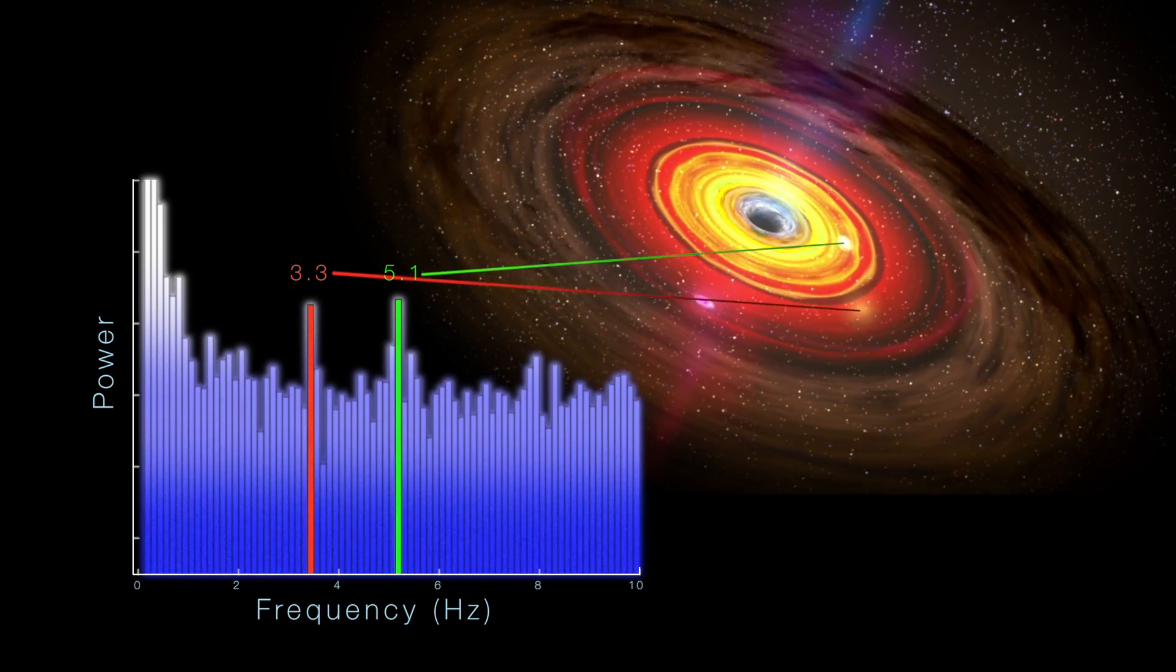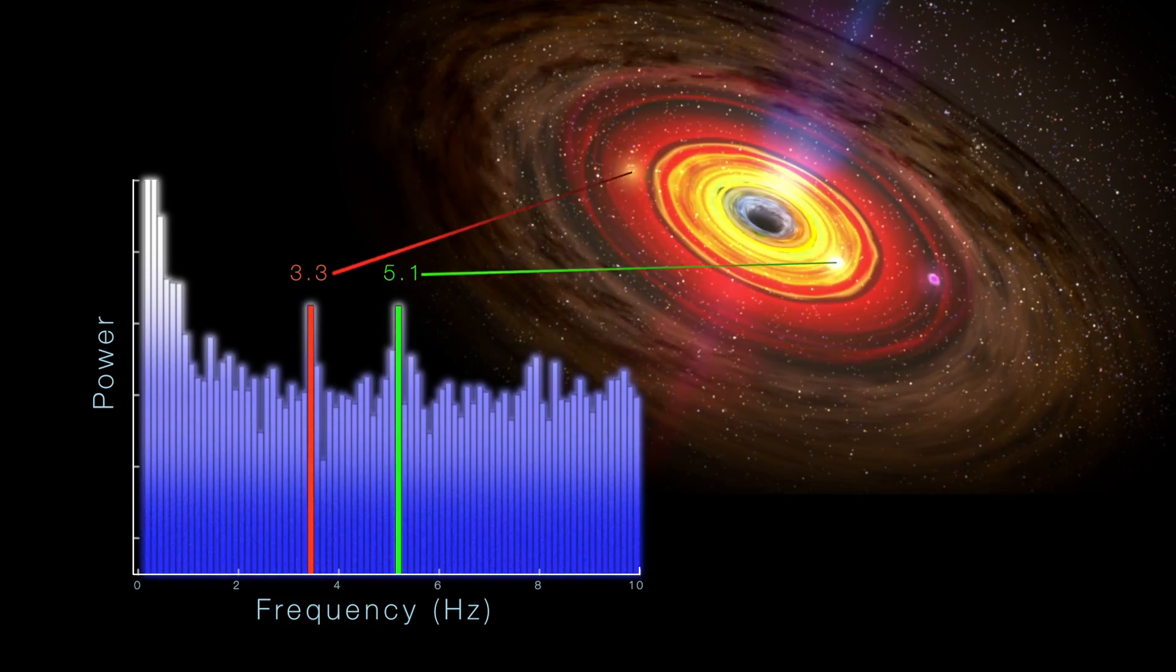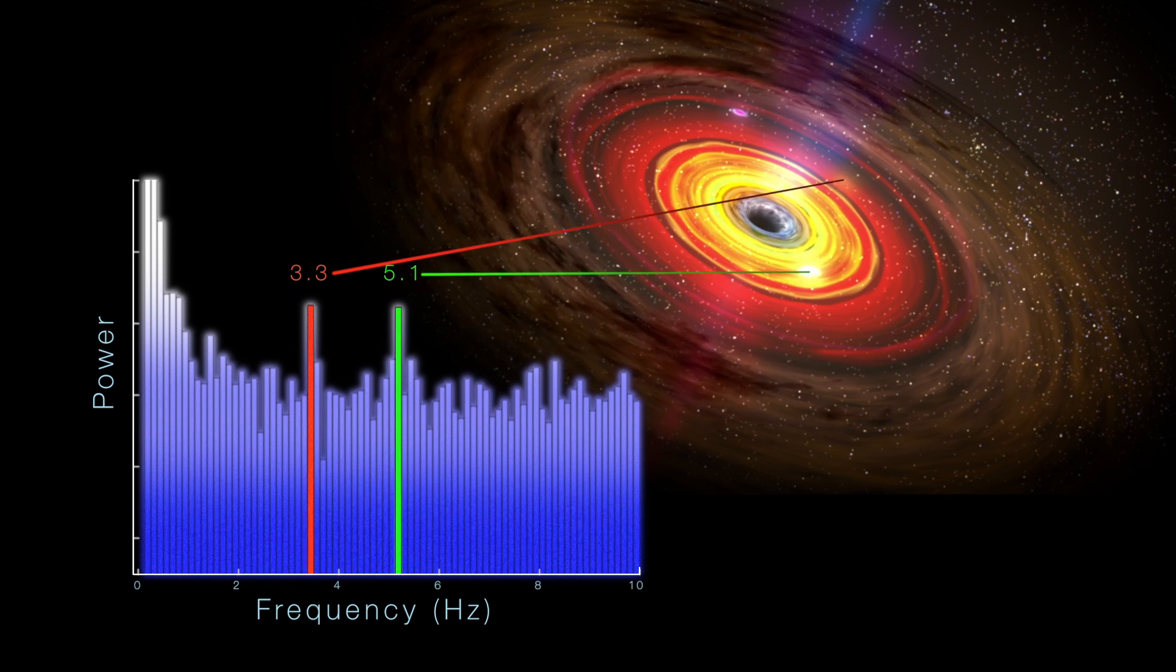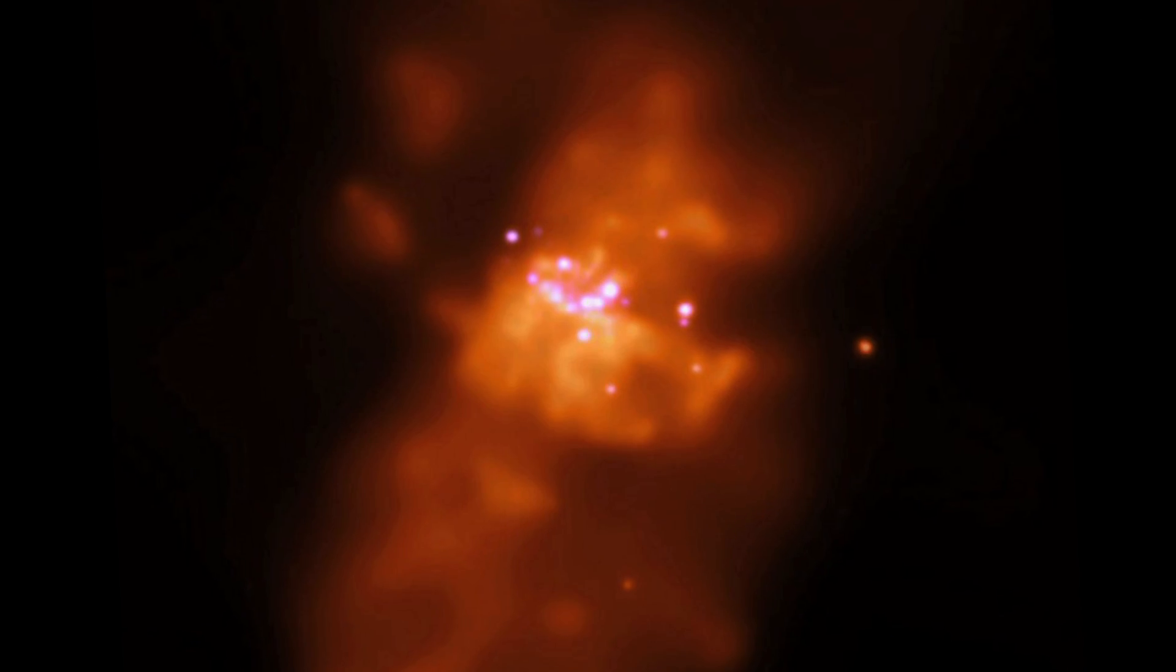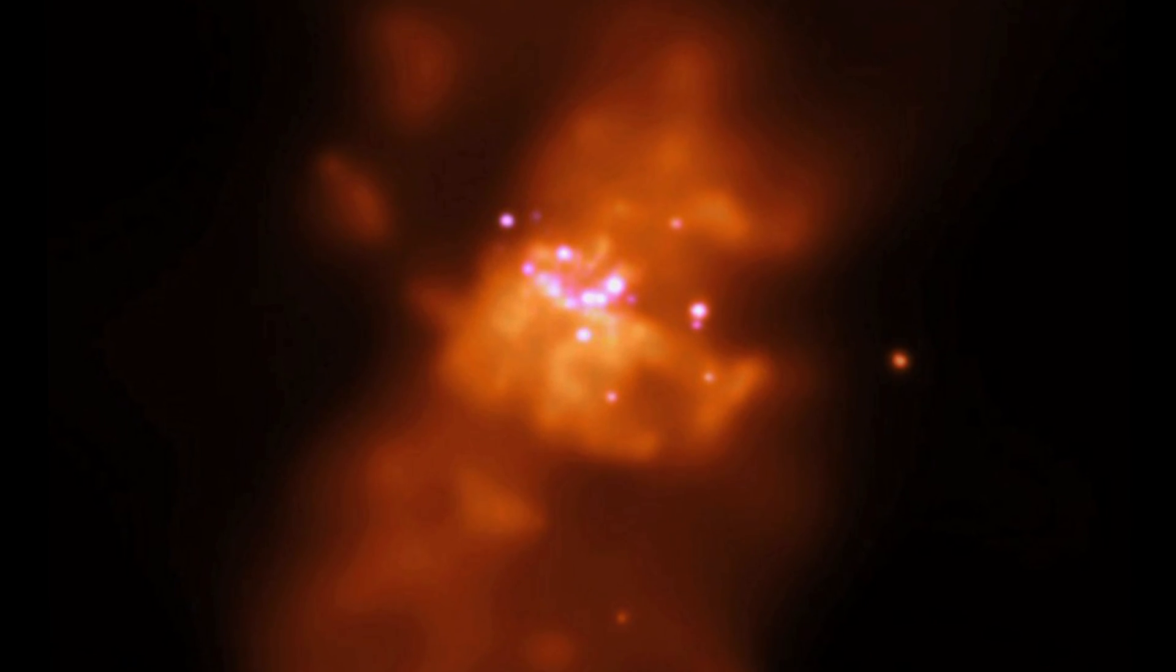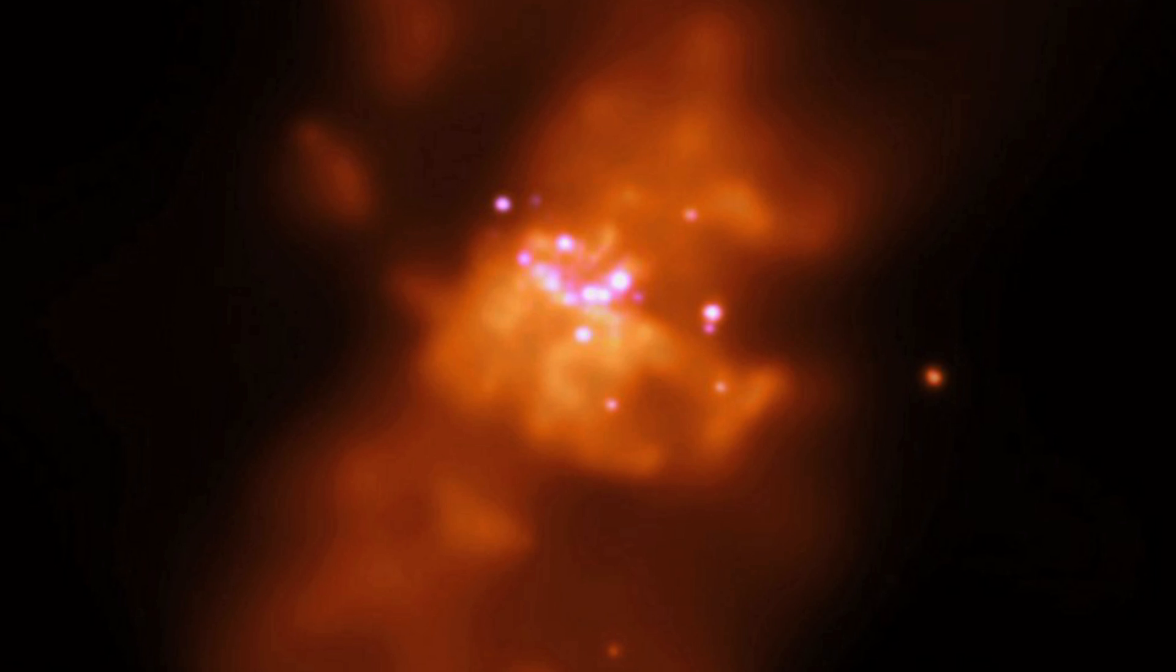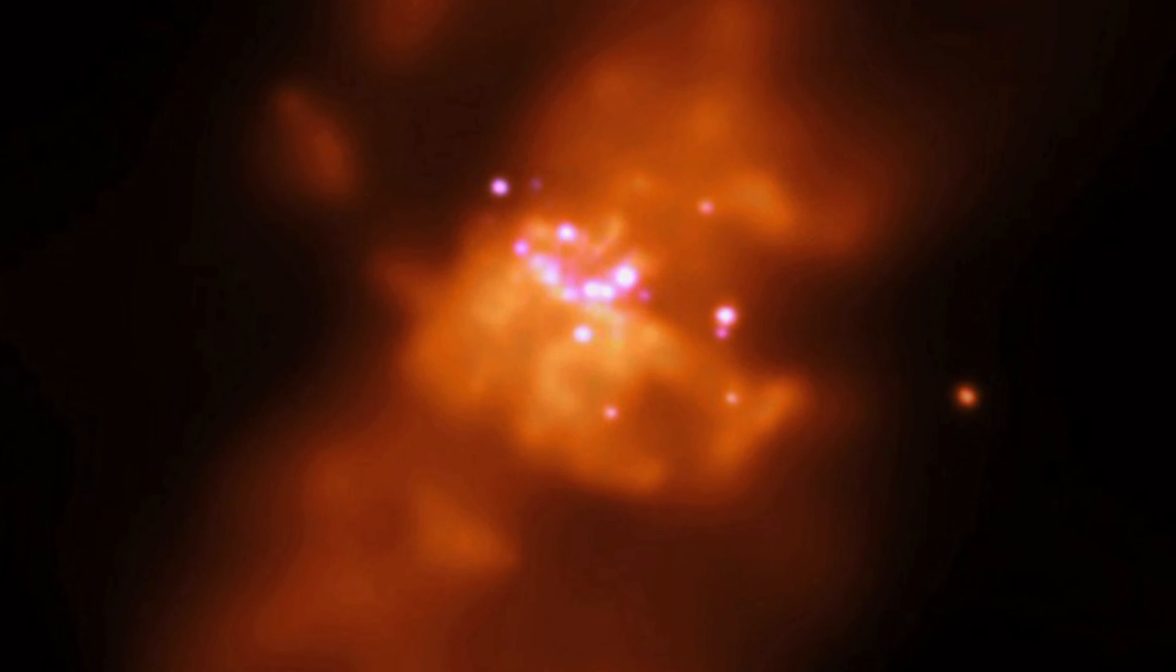These signals, combined with other previously established variations, pointed to an accurate mass of about 400 Suns. With that finding, M82X1 now joins the exclusive club of middle-mass black holes.